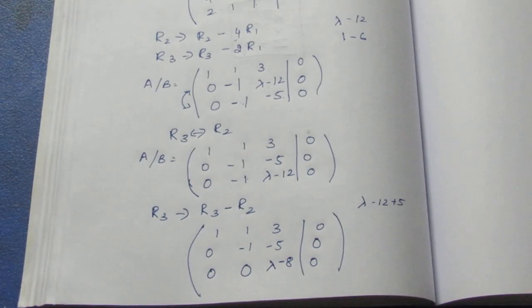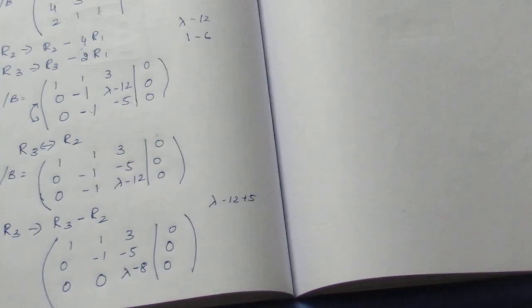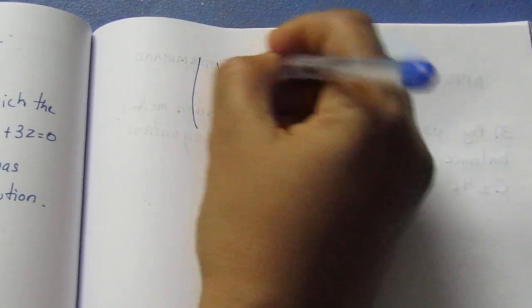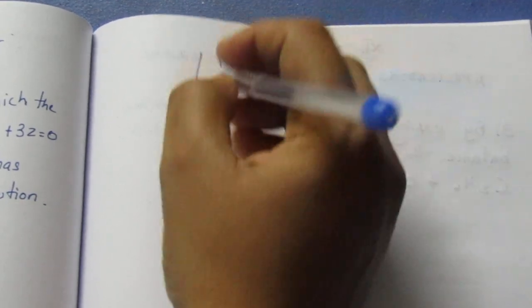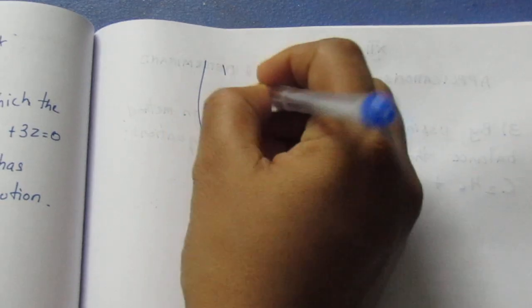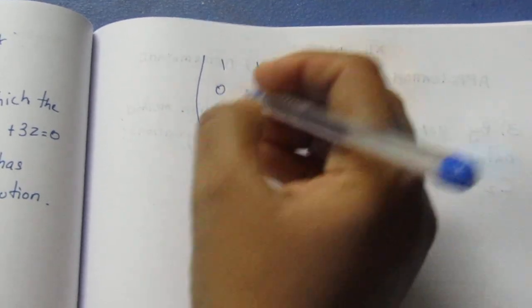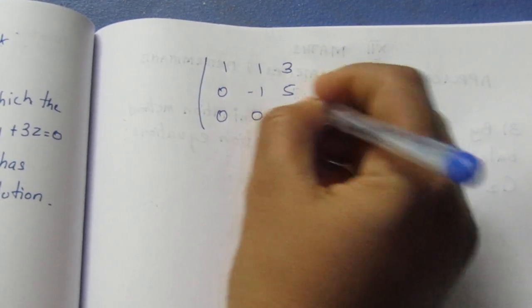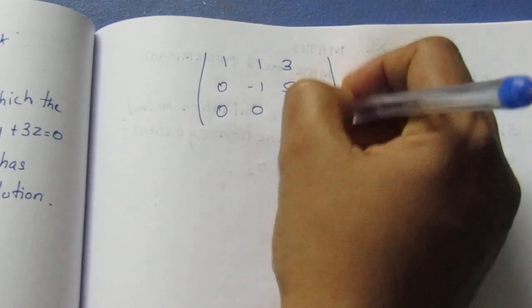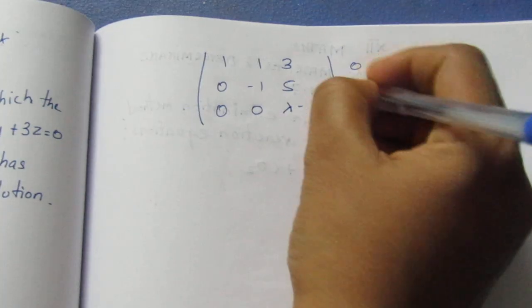Now we add the rank. Applying further row operations, the final augmented matrix is: 1, 1, 3; 0, minus 1, 5; 0, 0, lambda minus 8 — slash all zeros. So the third row's pivot element is lambda minus 8.